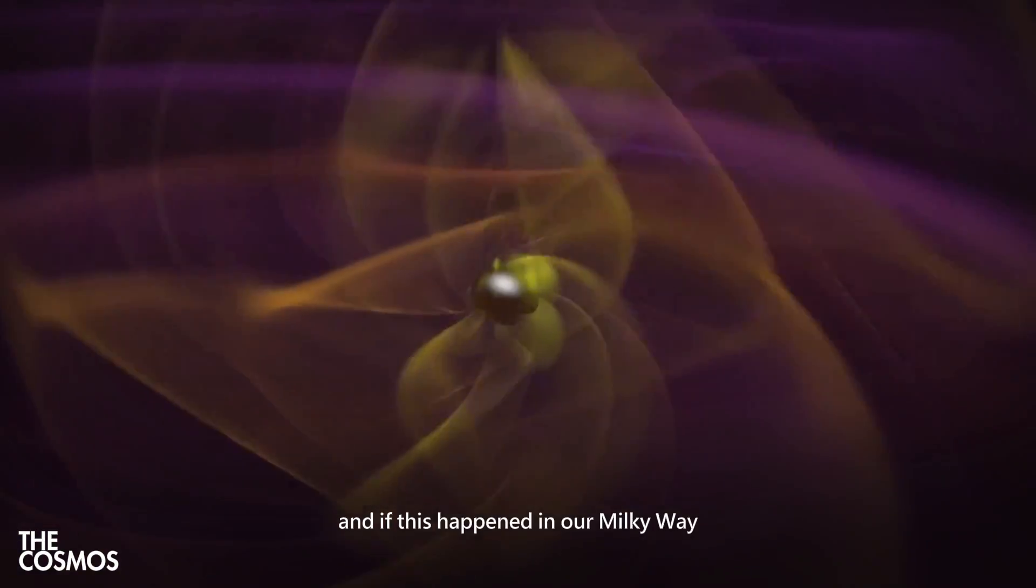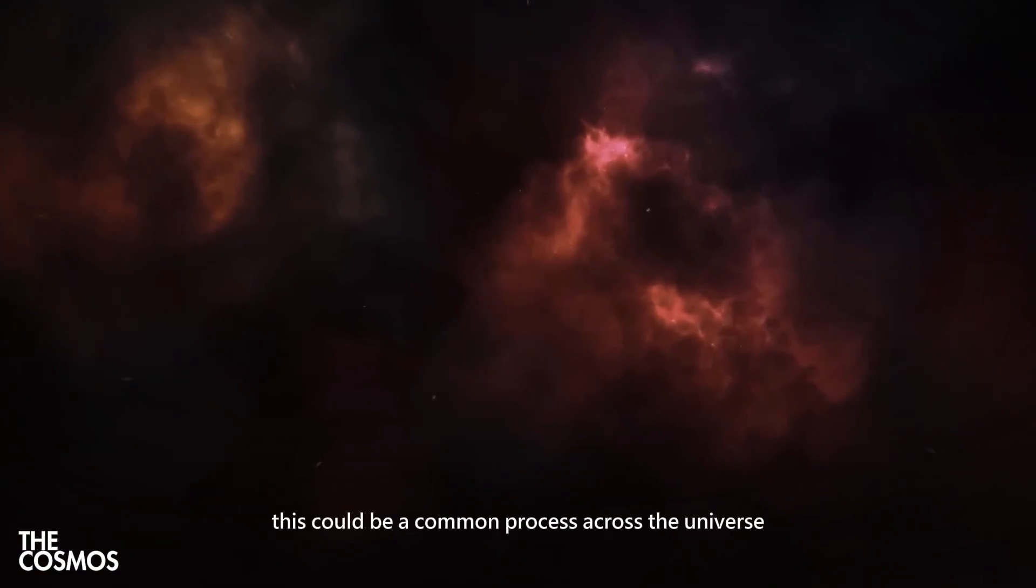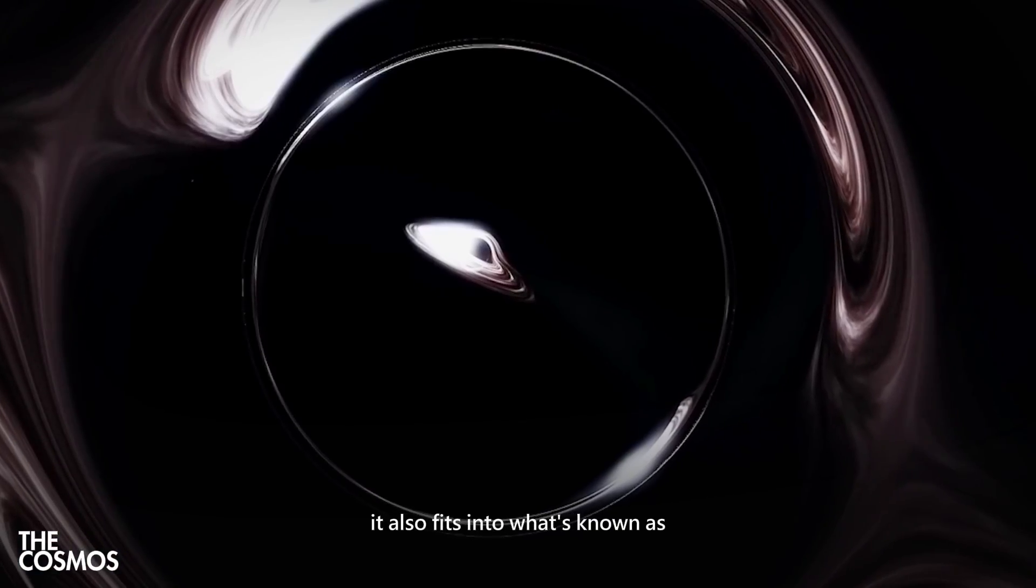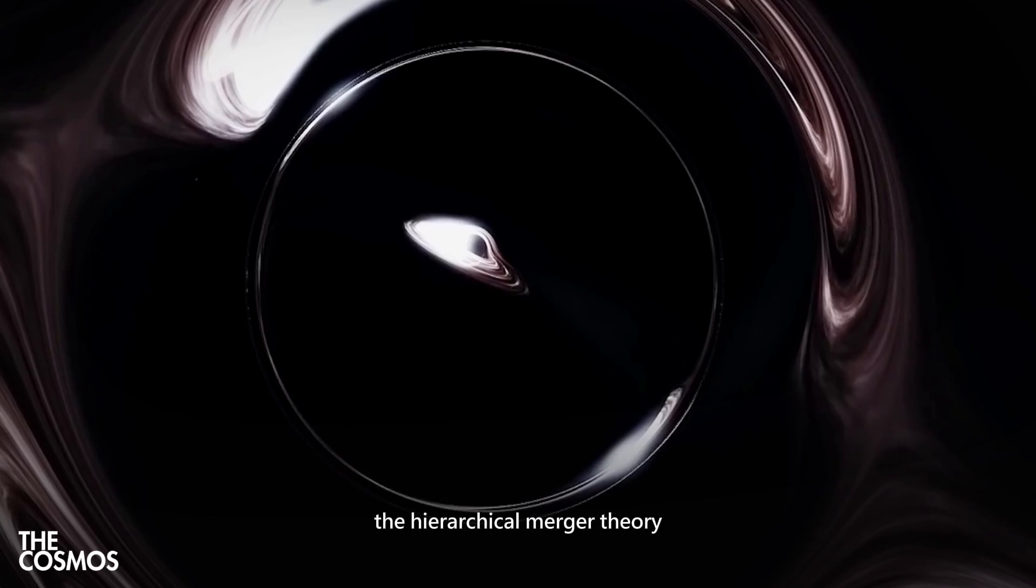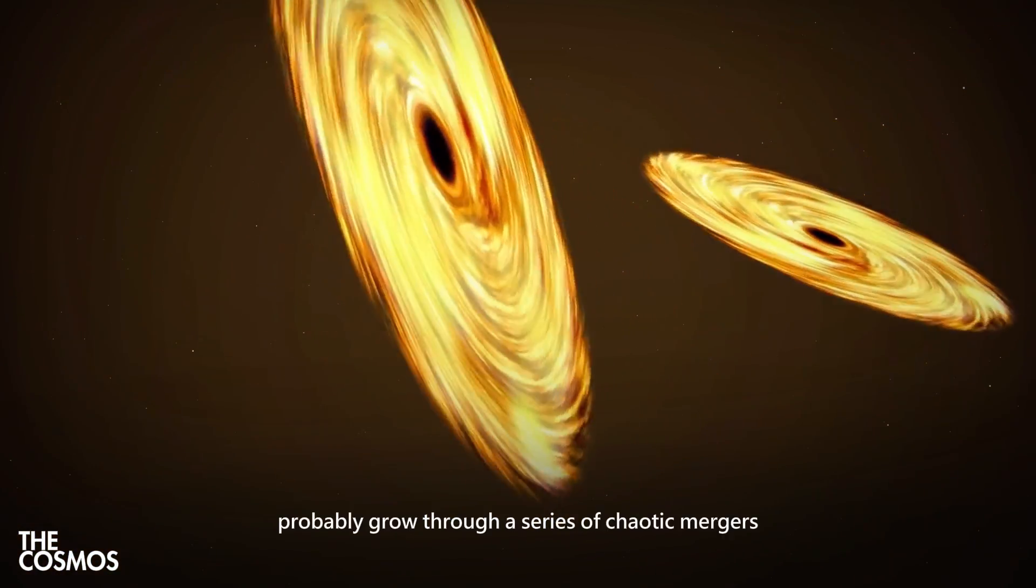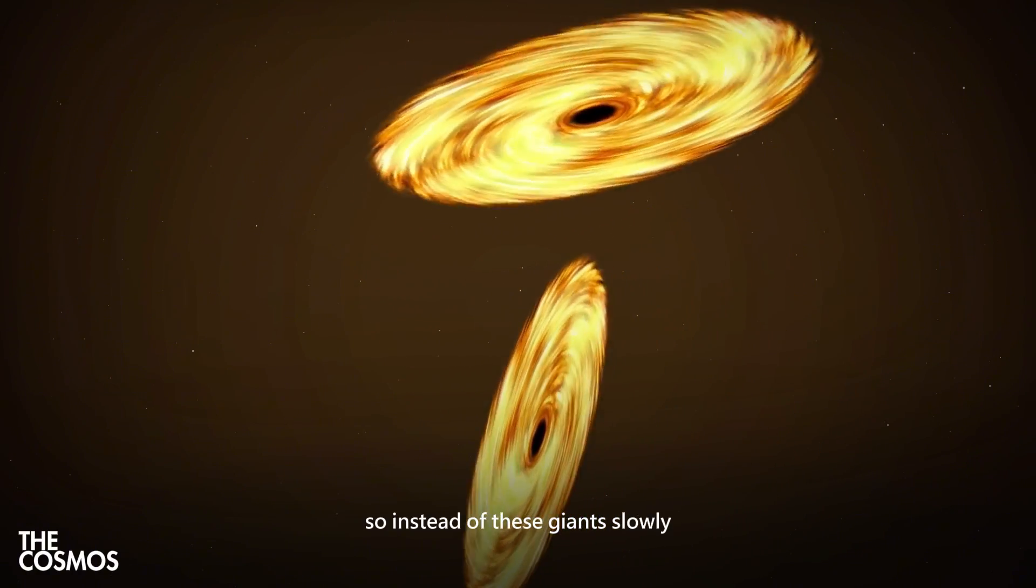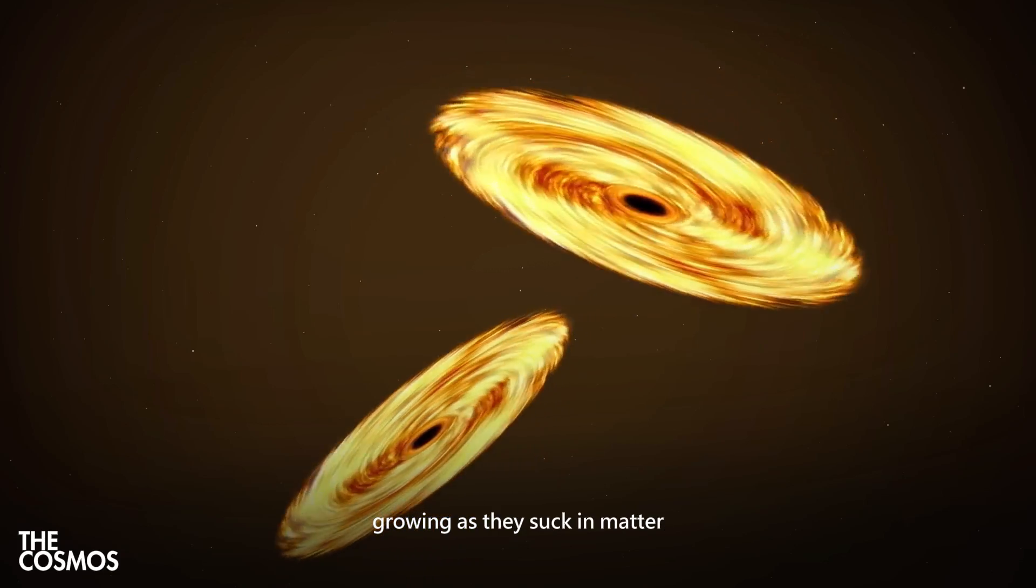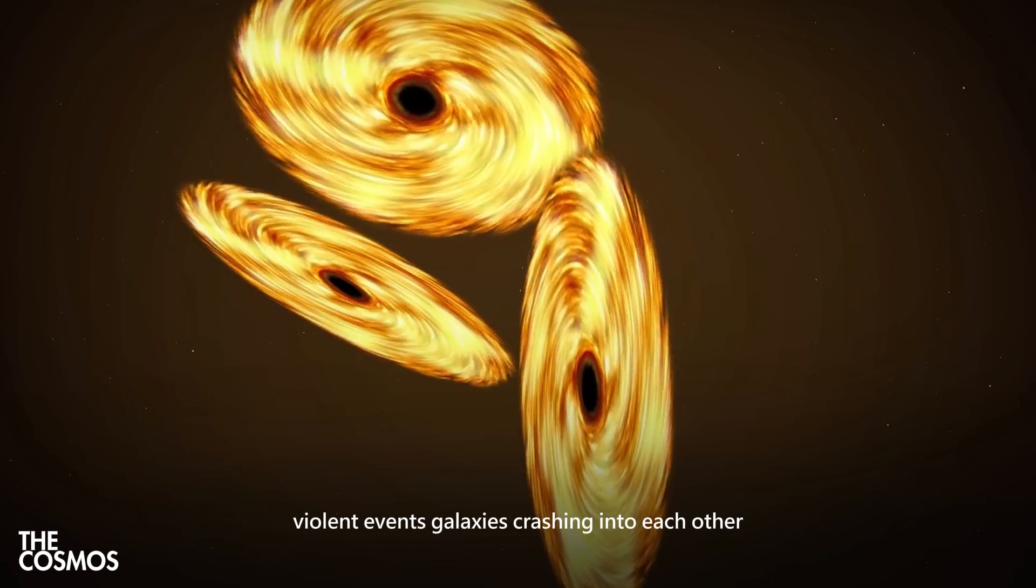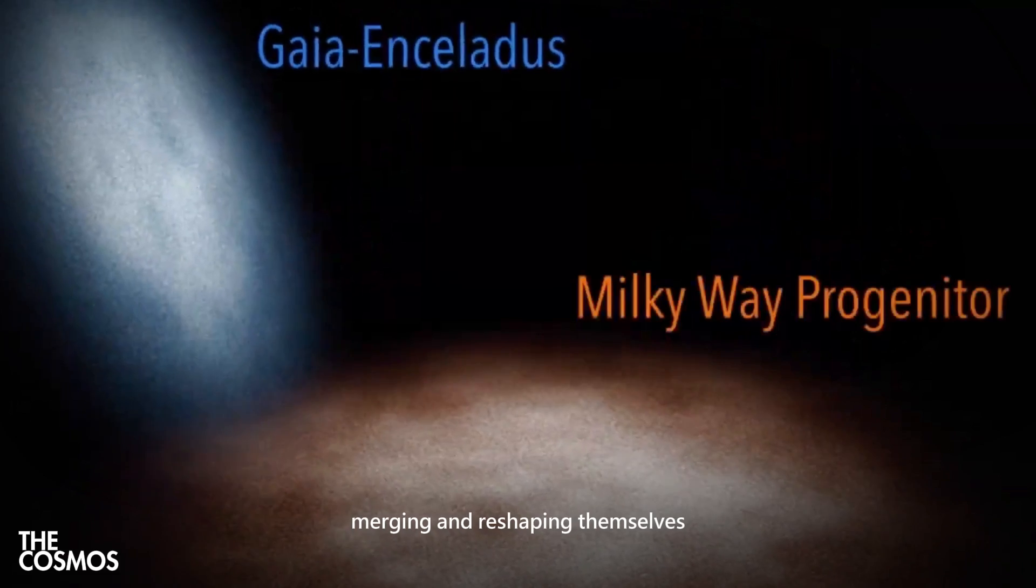And if this happened in our Milky Way, it's likely happening in other galaxies too, meaning this could be a common process across the universe. It also fits into what's known as the hierarchical merger theory, which is a fancy way of saying that supermassive black holes probably grow through a series of chaotic mergers over billions of years. So instead of these giants slowly growing as they suck in matter, it's more like they're forming from multiple violent events. Galaxies crashing into each other, merging, and reshaping themselves.